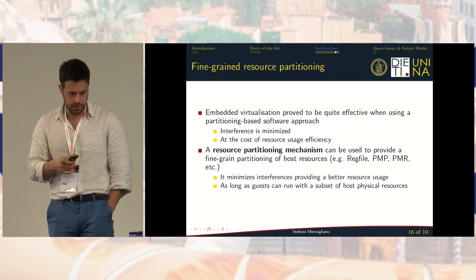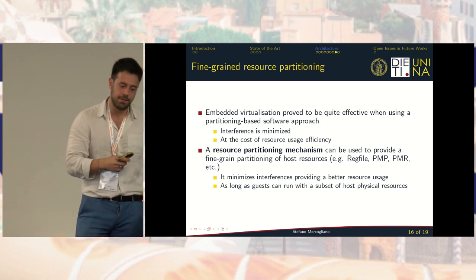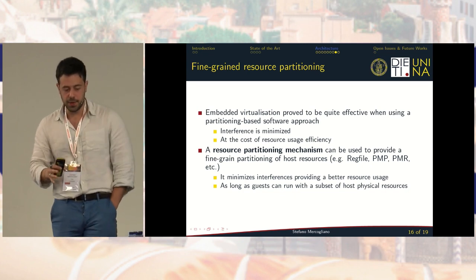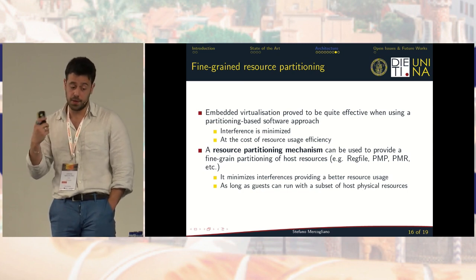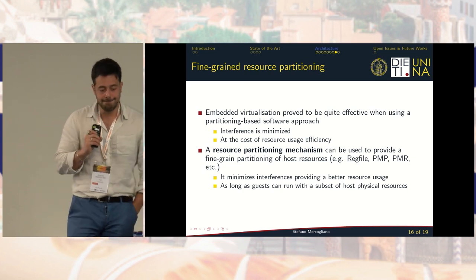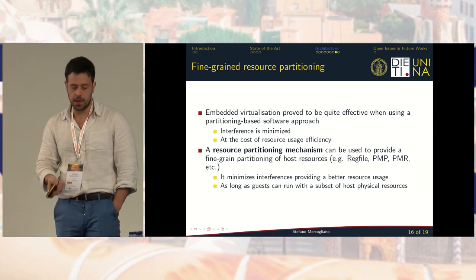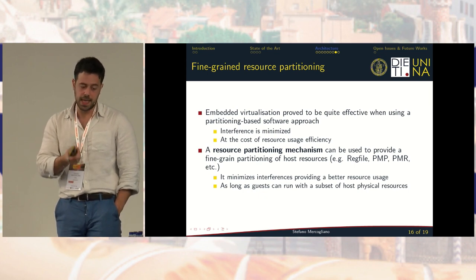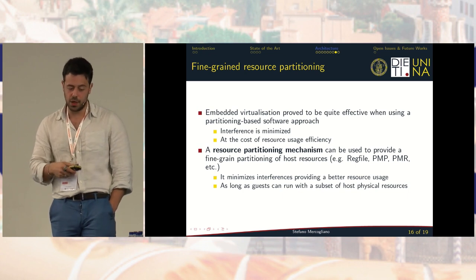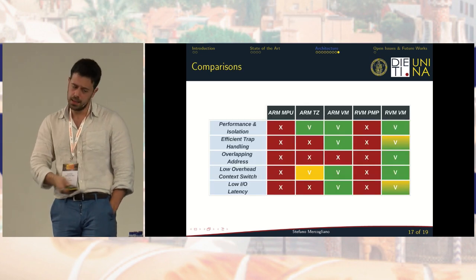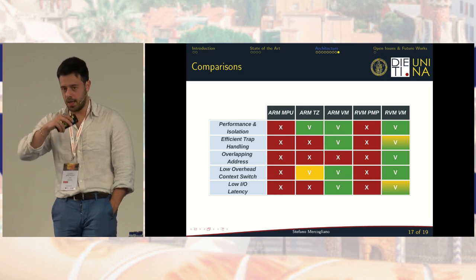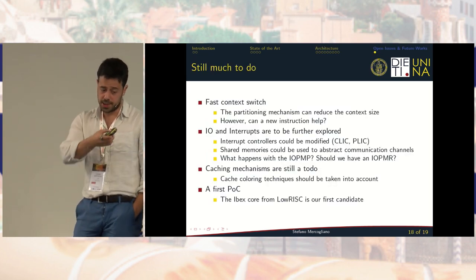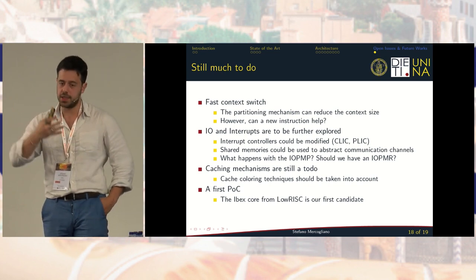A hybrid approach is also possible, though I will not discuss it today. The third idea is fine-grained resource partitioning. Embedded virtualization proves effective with a partitioning-based approach: partitioning resources minimizes interference at the cost of resource usage efficiency. The mechanism we propose can partition host resources at fine granularity — for example, the register file, PMP, or PMR — minimizing interference and improving resource usage, as long as guests can run with a subset of host physical resources. How to partition these resources is up to the hypervisor. The partitioning mechanism can also reduce context size by partitioning tables.